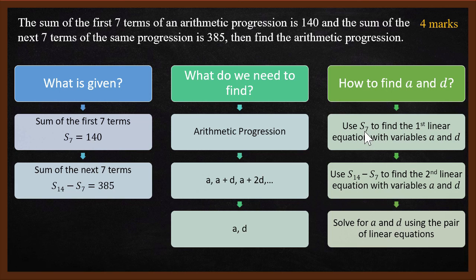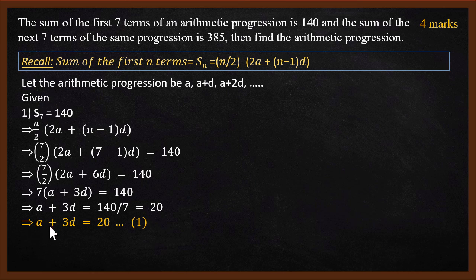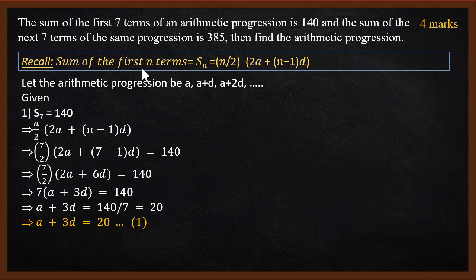Using the first 7 terms, we can find a linear equation with a and d. Using the next 7 terms, we find a second linear equation with a and d. So you get two linear equations. To find the first linear equation, recall the sum of the first n terms: S(n) equals n divided by 2, times 2a plus (n minus 1)d. We will use this formula to find the first 7 terms and the first 14 terms.